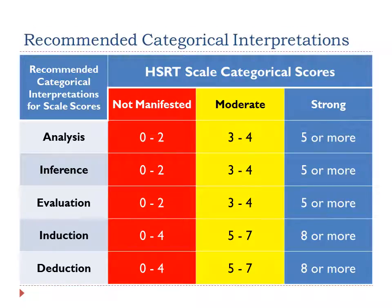This table displays cut scores for interpreting the strength of the HSRT scale scores. HSRT scores in the blue column are strong, and scores in the red column indicate that the skill being measured was not manifested. In other words, based on the answers provided by the test taker, ability to perform the skill was not detected. If you have a score in the red column, we encourage you to contact an academic success counselor to work on that skill.